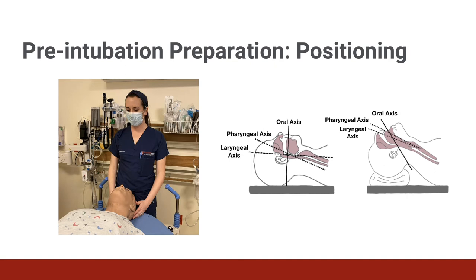This sniffing position is the combination of flexion of the neck and extension of the head. This is done by placing a small pillow or folded blanket under the patient's head to flex the cervical spine, and then extending the head will align the pharyngeal and laryngeal axes as shown.